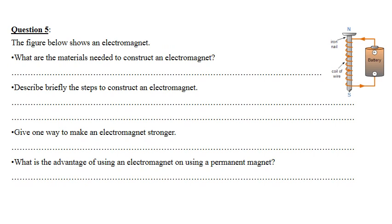Question five: the figure shows an electromagnet. Part one — materials needed to construct an electromagnet: a dry cell, an iron nail, and electric wire wrapped around the iron nail. Part two — steps to construct it: bring the iron nail, wrap the electric wire around it as many times as possible, then connect the two terminals of the wire to the positive and negative ports of the dry cell.